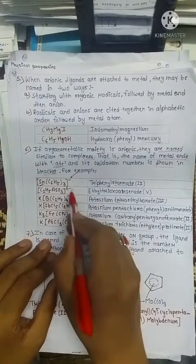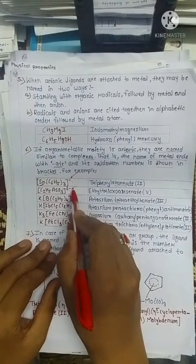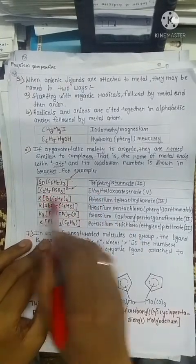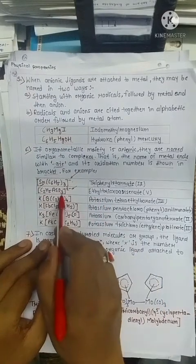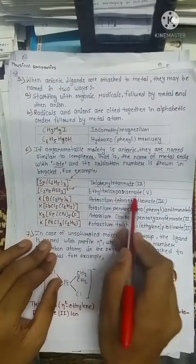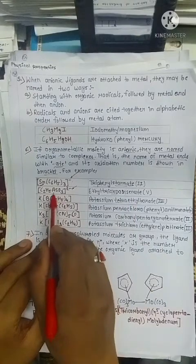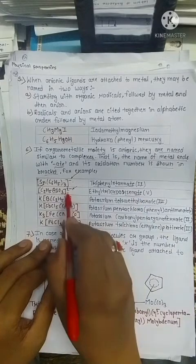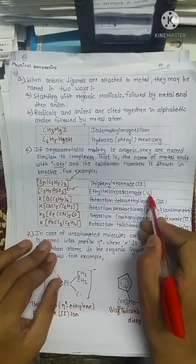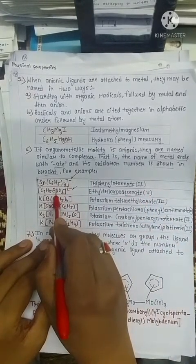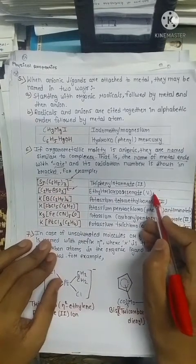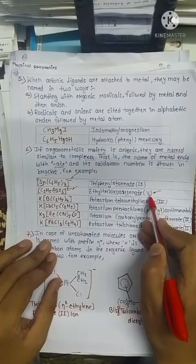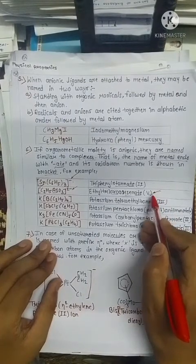In this case, the negative charge indicates it is an anionic moiety, so its name is written as ethyl trioxo-arsenate(V), not arsenate. The 5 in brackets represents the oxidation state of arsenic. How to calculate the oxidation state of arsenic is explained in detail in the coordination chemistry video, which you should watch.